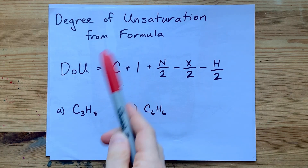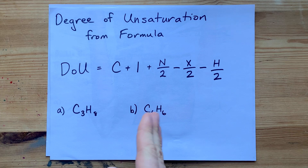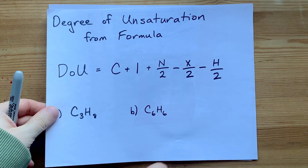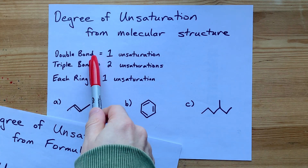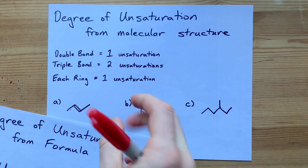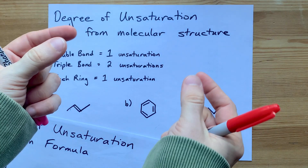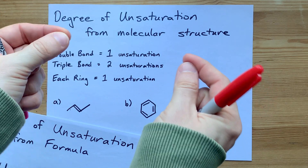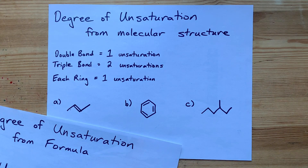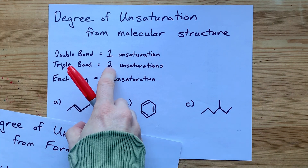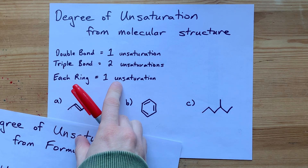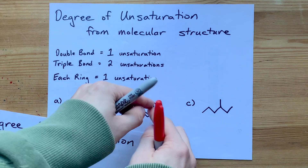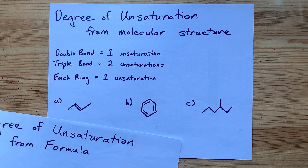The degree of unsaturation formula helps you figure out how many pi bonds and rings are inside a molecule. One double bond contributes one unsaturation — you could break open the double bond, the two carbons would still be connected by a single bond, and you could add extra H's. A triple bond counts as two unsaturations, and a ring also counts as one unsaturation because you could break the ring apart along one bond, turn it into a straight chain, and add an H to either end.